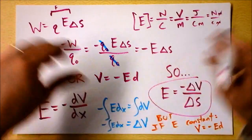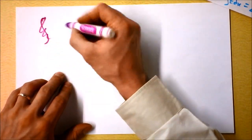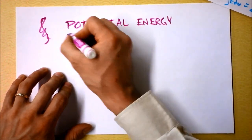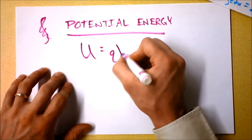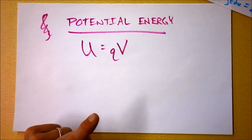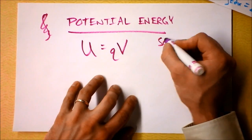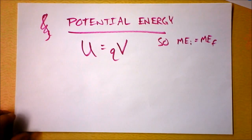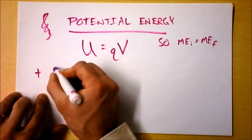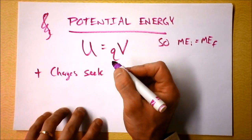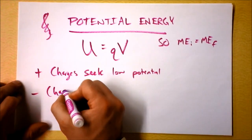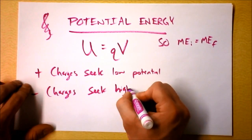Let's define electric potential energy quickly. Potential energy is charge times voltage — U = QV. That's a very useful equation. Energy is conserved: if something is losing potential energy, it's gaining kinetic energy, as long as it's in a conservative field. Positive charges seek low potential, and negative charges seek high potential.